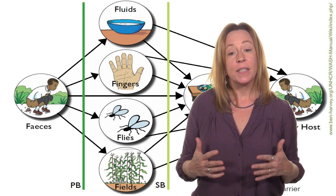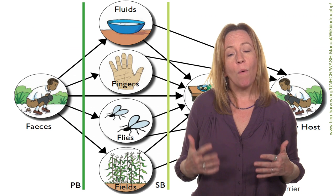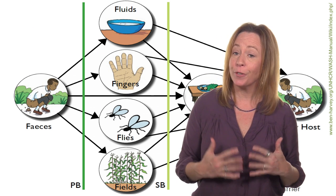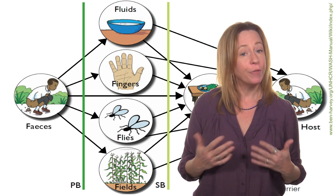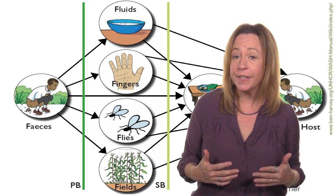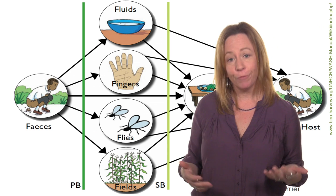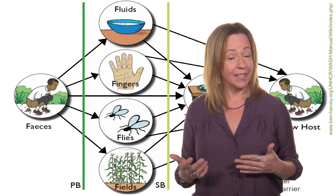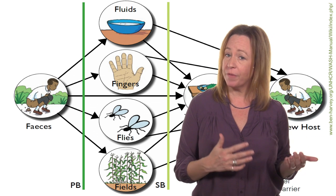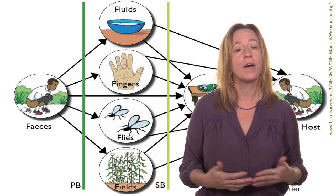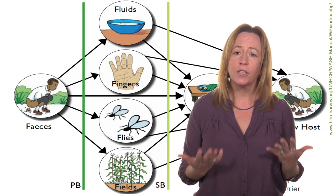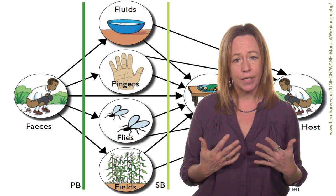The F diagram depicts fecal-oral routes of contamination, which is what we need to prevent to ensure public health. Fluids — if excreta contaminates drinking water. Fields — if excreta contaminates food crops. Flies — as flies are vectors, they are attracted to both feces and food, resulting in cross-contamination. And fingers — not adequately washing your hands before touching food or eating.